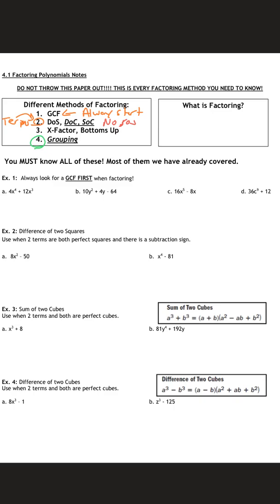So what is factoring? It's undistributing. What we're doing is taking something out — we're not distributing it. So if we have something like 4x as my GCF, then say an x plus 3 and a 4x minus 7, this is what factored form is going to look like. If I distribute it back out, I would get what I started with. You must know all of these methods.